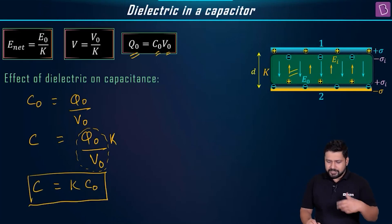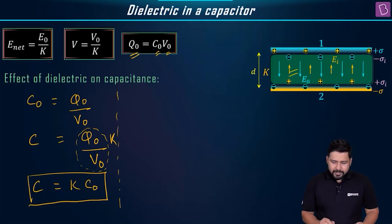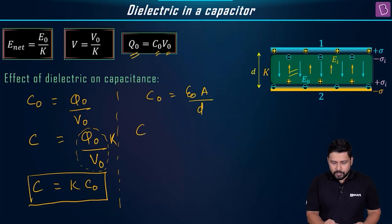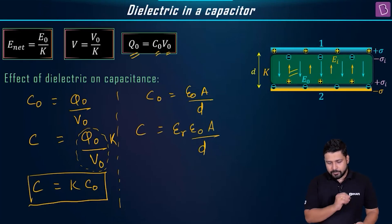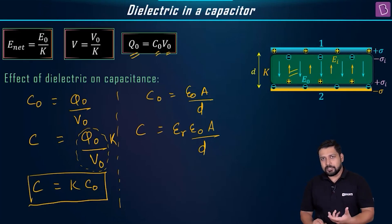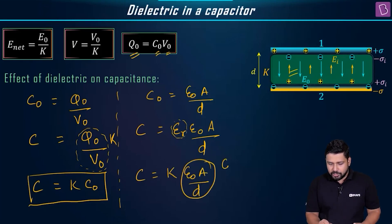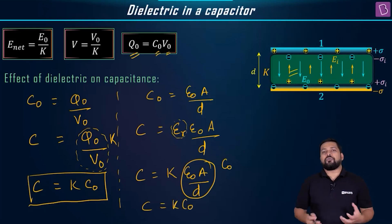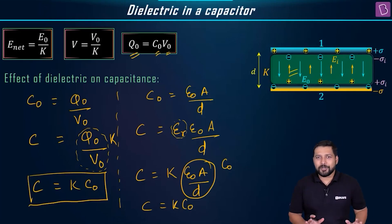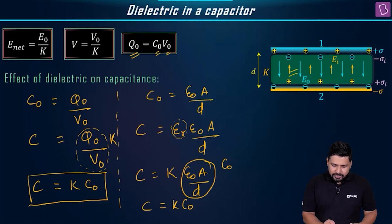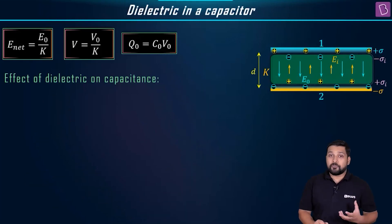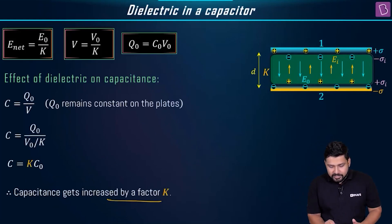There is also a second approach to prove the same result. The initial capacitance C₀ = ε₀A/D. The new capacitance with the dielectric is C = εᵣ × ε₀ × A/D, where εᵣ (relative permittivity) is equal to the dielectric constant K. So C = K × ε₀A/D = K × C₀. Both methods give the same result: capacitance increases by a factor of K.